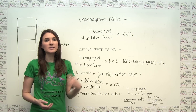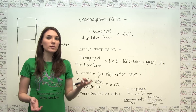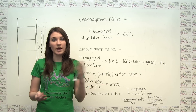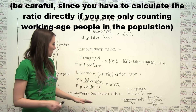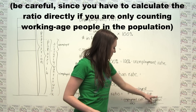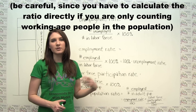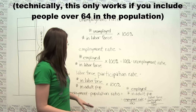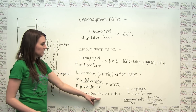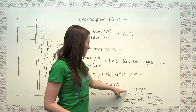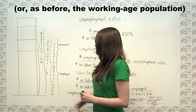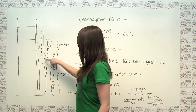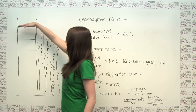One other useful statistic is the employment-population ratio, which is equal to the number of employed people divided by the adult population. Given the earlier definitions, the employment-population ratio equals the employment rate times the labor force participation rate — or more specifically, the employment rate divided by 100 times the labor force participation rate divided by 100, to account for the fact that we multiplied by 100% when representing those rates as percentages. So the employment-population ratio is the number of employed people divided by the number of people in the adult population.